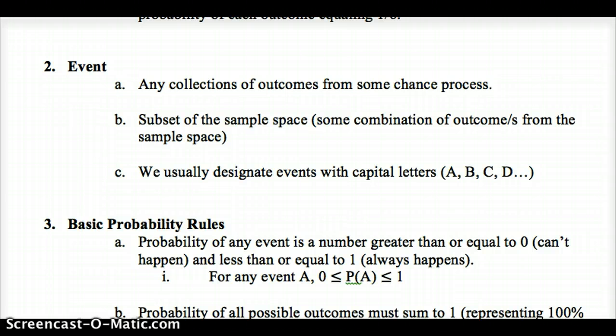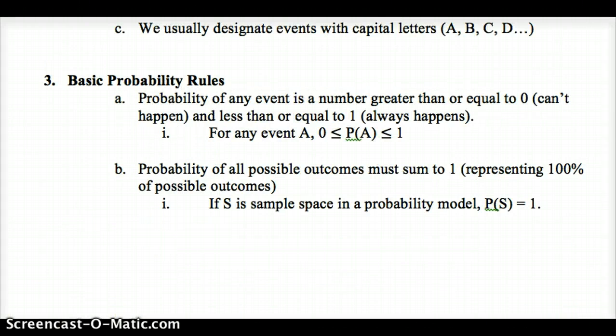An event is some subset of that sample space. It might be the sum of 3. That would give us two possibilities: a 1 and a 2, and a 2 and a 1. That would be a subset of the whole sample space. It's either one of the outcomes or a combination of the outcomes. We usually designate it with a letter, like probability of A, B, C, or D. We would say A equals the two dice sum to three. Since there's two possible ways to do that out of 36 combinations, it would be 2 out of 36, or 1 out of 18.